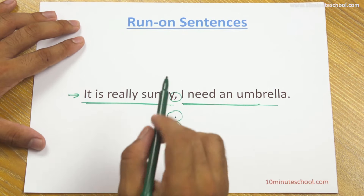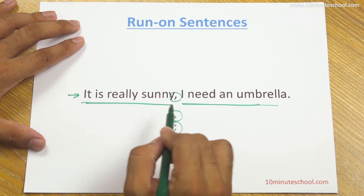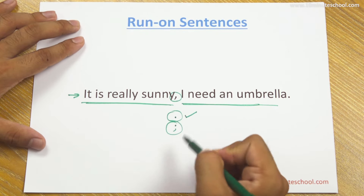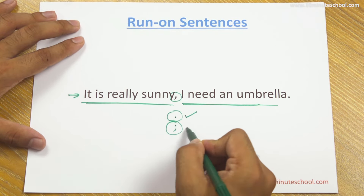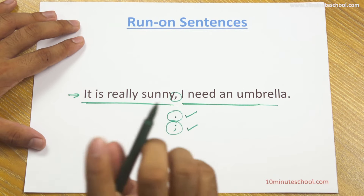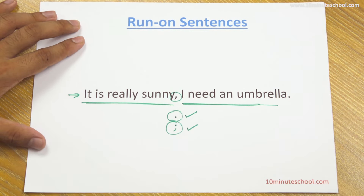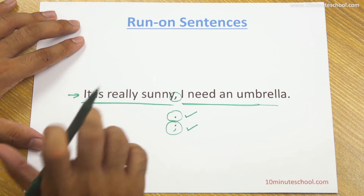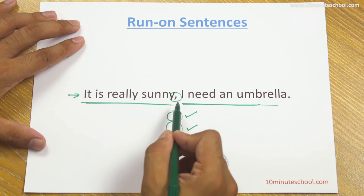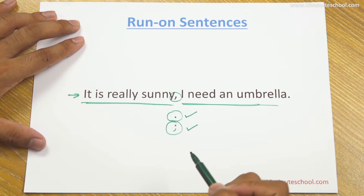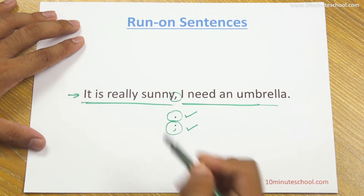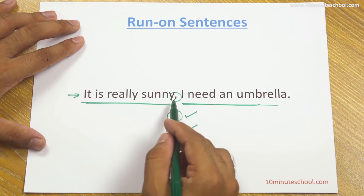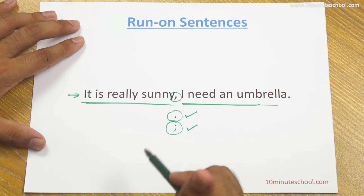If you have a full stop or a semicolon, that will be the correct way. Always remember that when two sentences are properly independent, you must use a full stop or a semicolon. If you give a comma, that is wrong — you will have a run-on sentence.